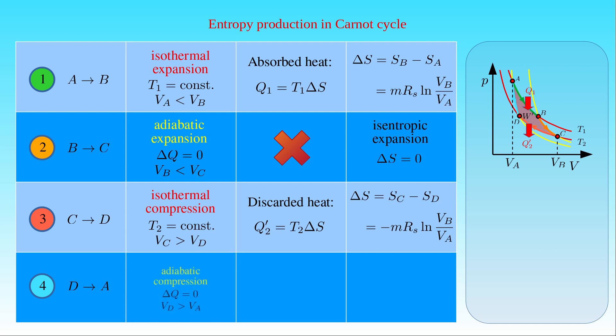The fourth step of the cycle is an adiabatic compression between states D and A, where no heat is exchanged between the working substance and its surroundings, and the initial volume V_D is greater than the final volume V_A. Since there is no heat absorbed or rejected, there is no change in entropy S, and this step is an isentropic process.